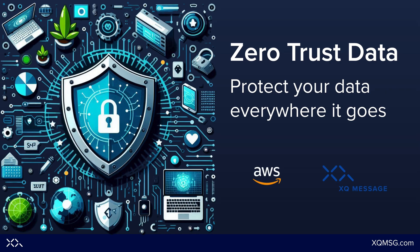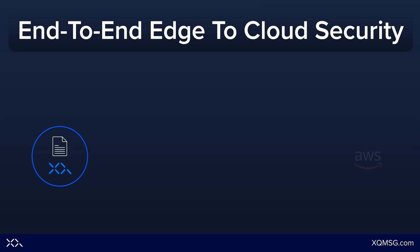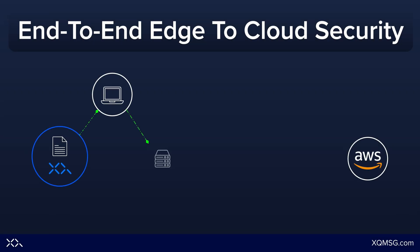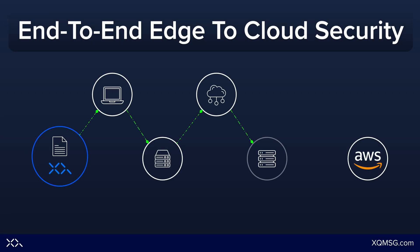XQ's Zero Trust data protection is designed to complement AWS's robust data security by extending protection to the edge. While AWS provides a secure infrastructure for managing and protecting data within its cloud environment, XQ enhances this by securing data in transit and at the edge, ensuring that it remains protected no matter where it travels or resides. This includes securing data across various networks, devices, and applications outside the core AWS environment, aligning with Zero Trust principles that verify and protect data at every step.